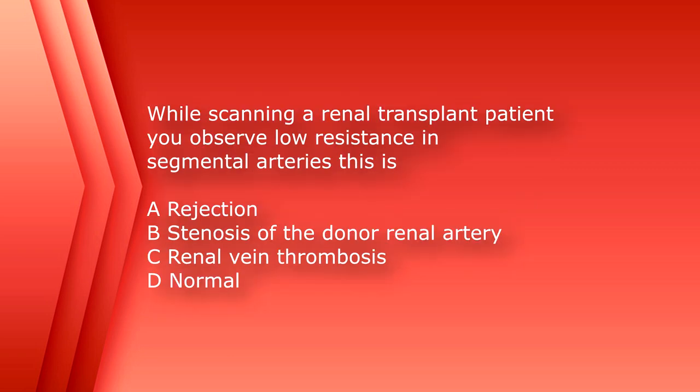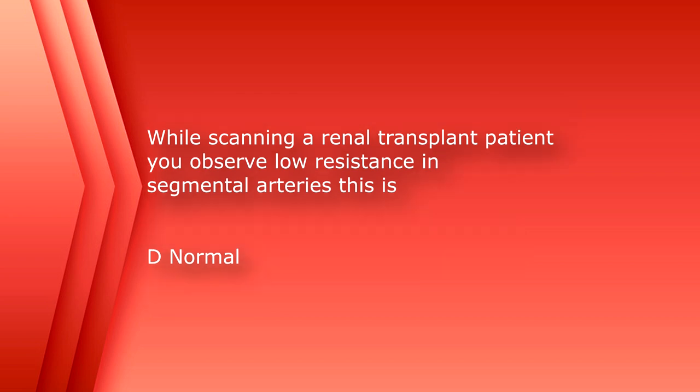Number 50: while scanning a renal transplant patient, you observe low resistance in segmental arteries. This is A. Rejection, B. Stenosis of the donor renal artery, C. Renal vein thrombosis, or D. Normal. The answer is D, normal. This concludes the second set of 25 questions. Please stay tuned for the next set. Thank you and take care.